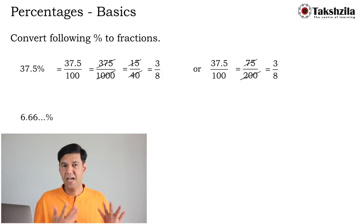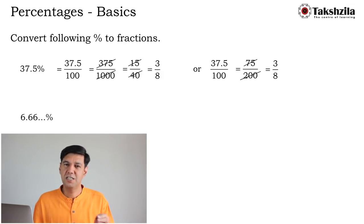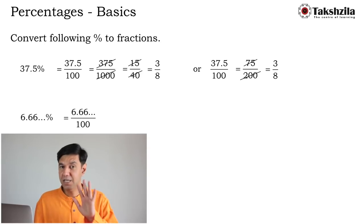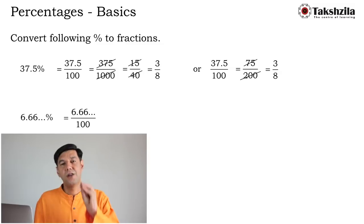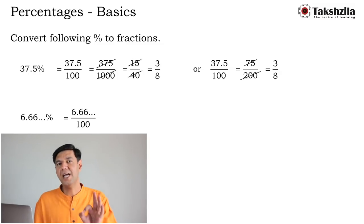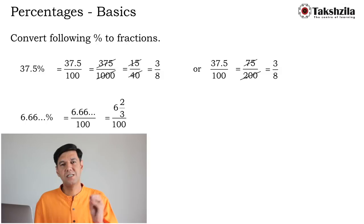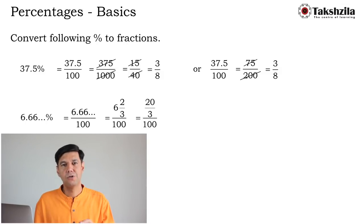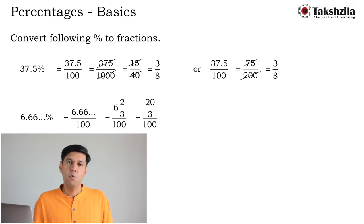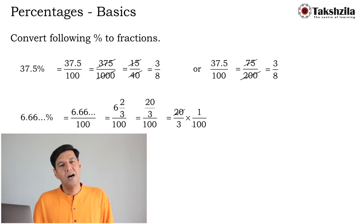Now convert 6.6666...% to a fraction. Write it as the mixed fraction 6⅔ = 20/3. Then (20/3) ÷ 100 = 20/300 = 1/50. So 6.66...% = 1/50. Do not approximate recurring decimals — write them correctly as mixed fractions to get exact results.